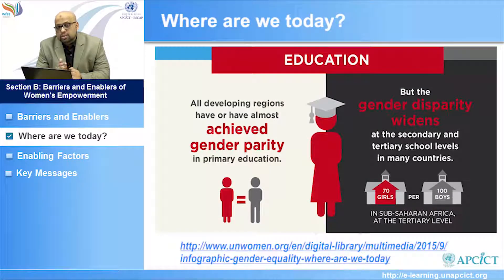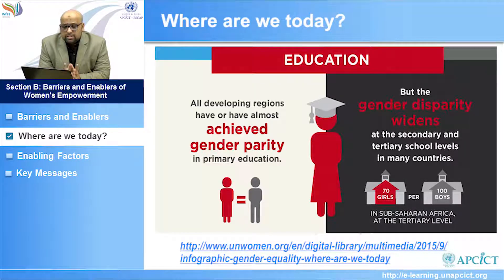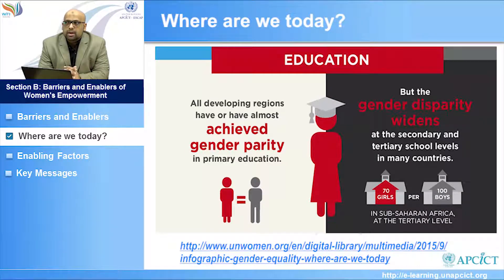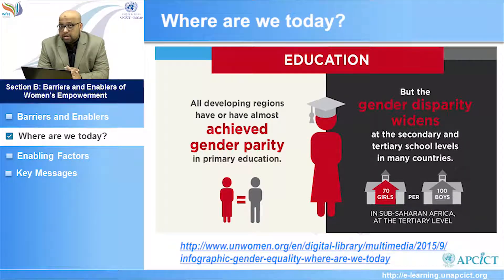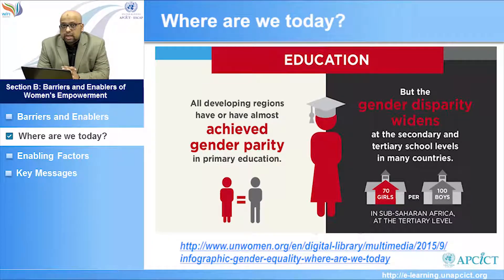Moving from literacy to education: all developing regions have almost achieved gender parity in primary education, but when you move towards secondary and tertiary education, things are not similar — there are many challenges. In sub-Saharan Africa at the tertiary level, only 70 girls are in the education system compared with 100 boys, leaving a lot of room for development.